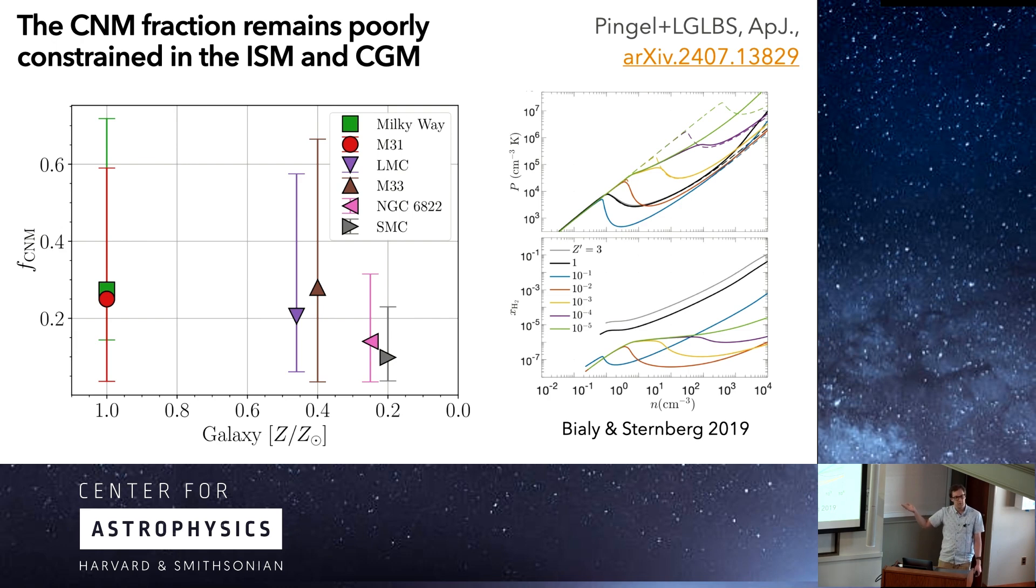To emphasize this, we don't actually know most about the cold-neutral medium, and that's true in both the ISM and the CGM. I'm showing what would be an ISM result here. This is the fraction of the CNM measured by 21-centimeter absorption for different local group galaxies shown as a function of decreasing metallicity. The thing I want you to take away is there's huge error bars. Those error bars are a combination of two things: very few lines of sight, and real physical scatter within the CNM for all of these different galaxies.